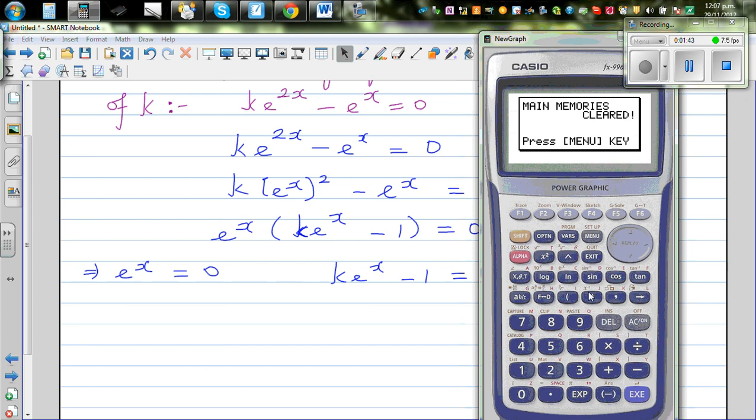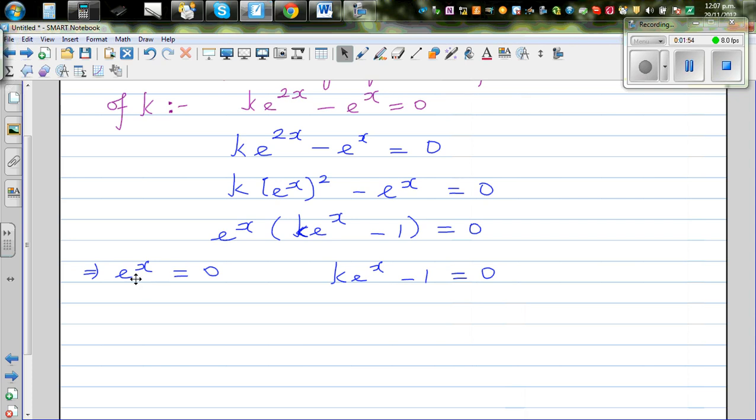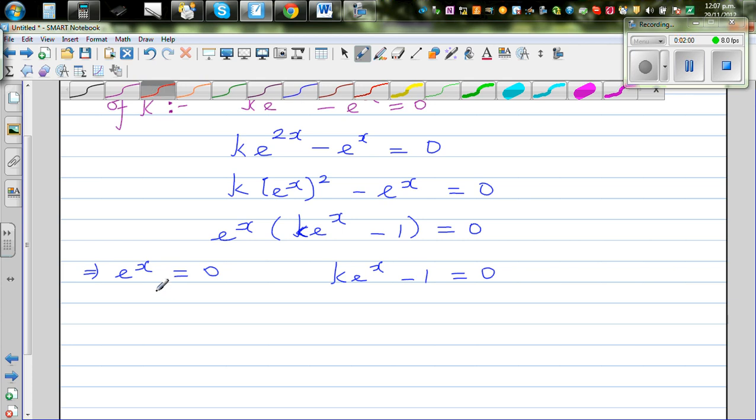If you have a scientific calculator, if you press shift e to the power of 1, this is 2.7182. So e is a constant. Any number raised to a variable can never become 0.